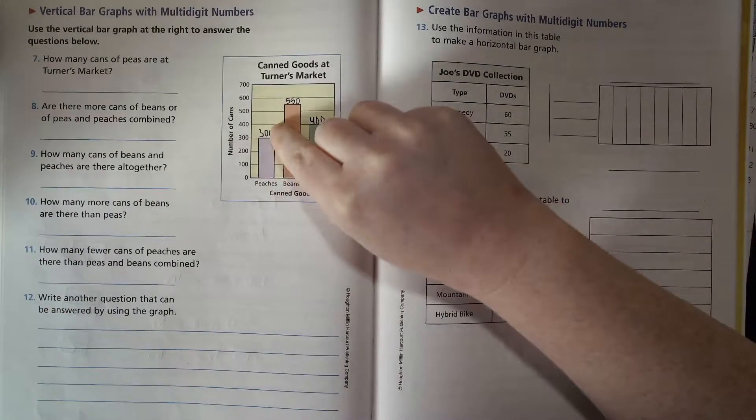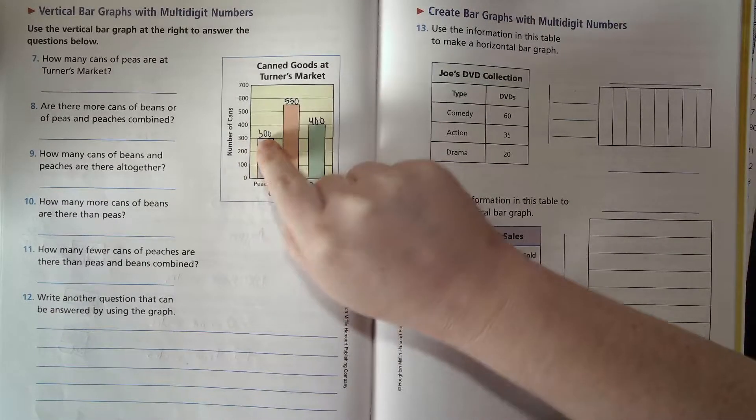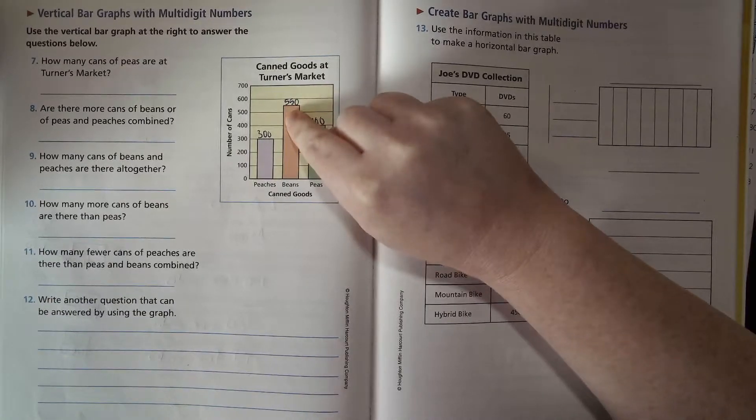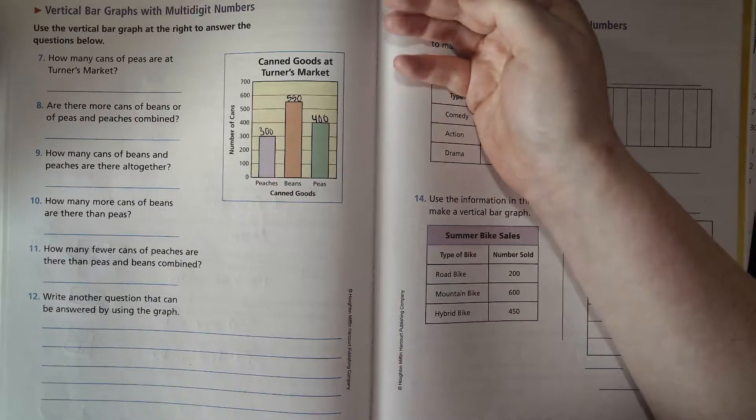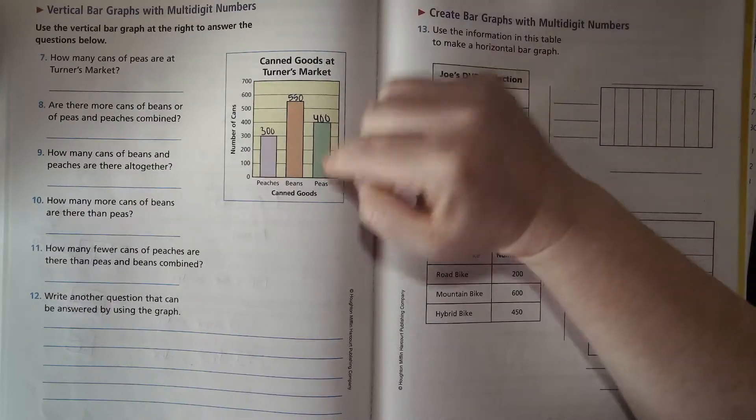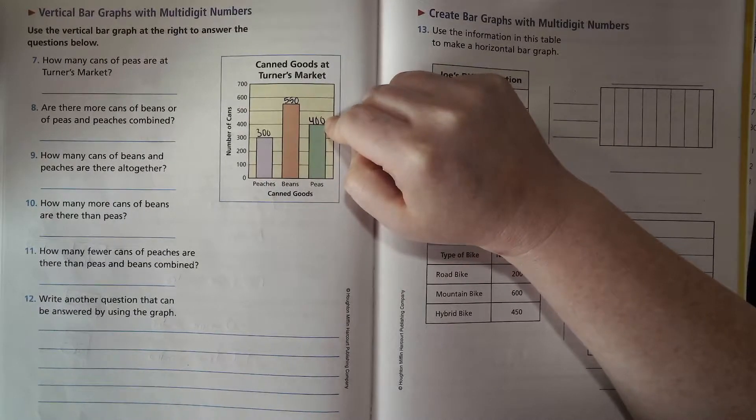This bar represents the peaches. It goes up to that 300 line, so I wrote 300 right there. The beans goes up to halfway between the 500 and 600, so I had to ask myself what's halfway between 500 and 600? 550, right. And then peas, it goes up to the 400 line, so I wrote 400 there.